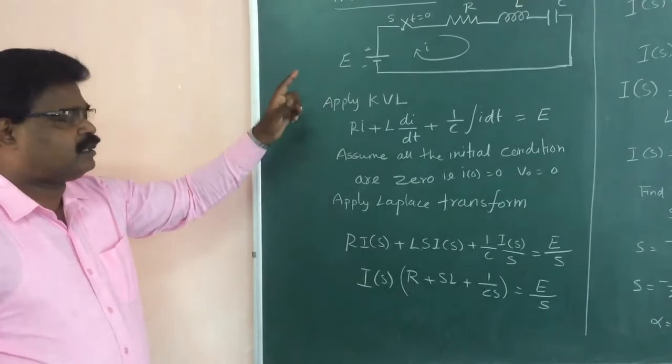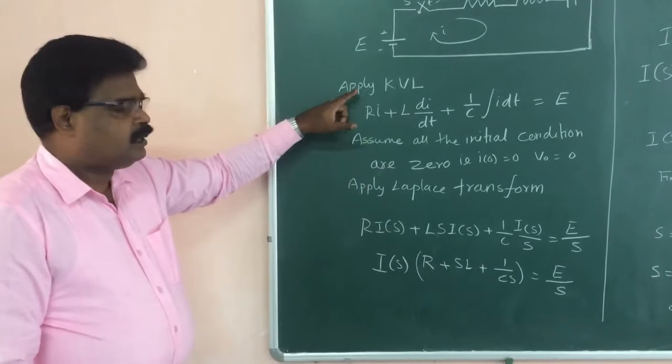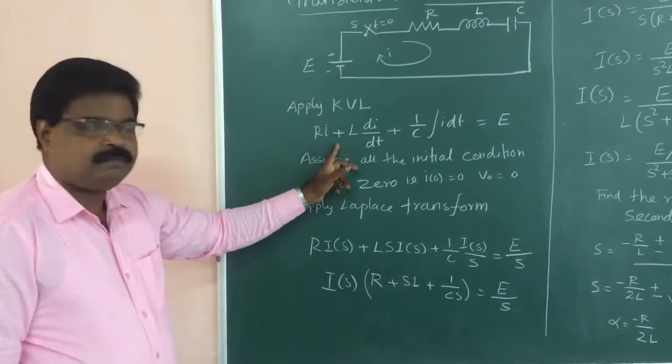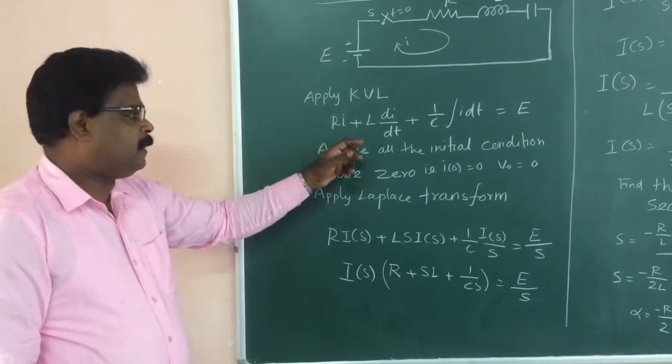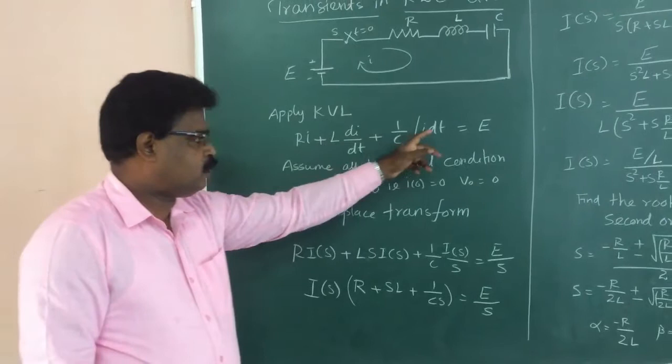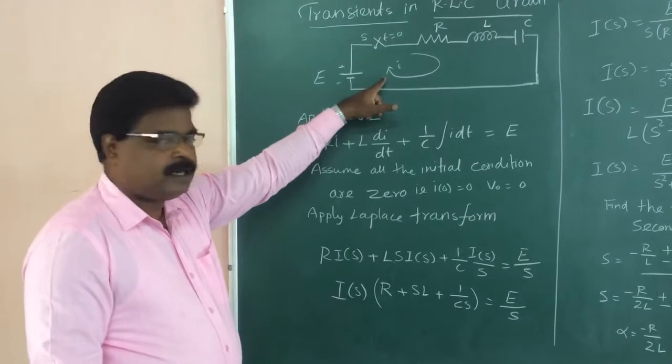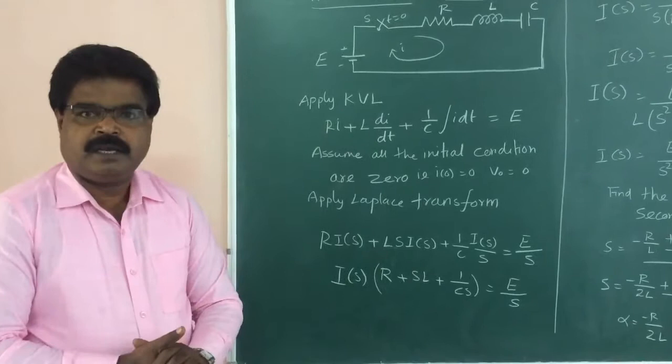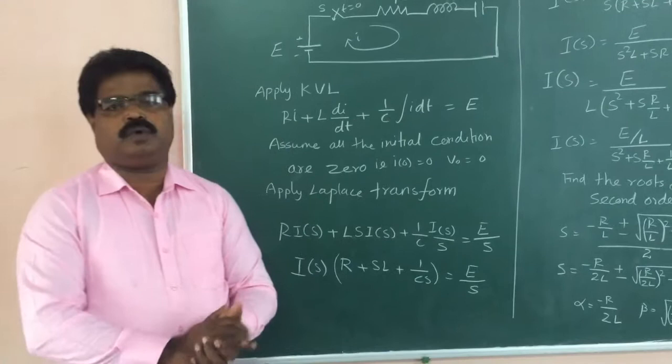We are going to see the transients in RLC circuit. Our aim is to derive I of T. First you have to write Kirchhoff's voltage law equation in time domain. In the case of resistance, it is R into I. In the case of inductance, it is L into dI by dT. Plus 1 by C into integral of I of T — that is the voltage across the capacitor — equals plus E. The current flows from minus to plus in the battery, so that equals plus E. This is a simple thumb rule.